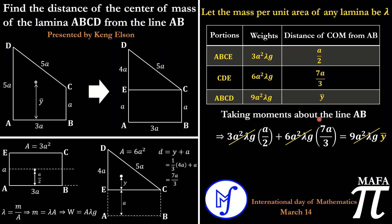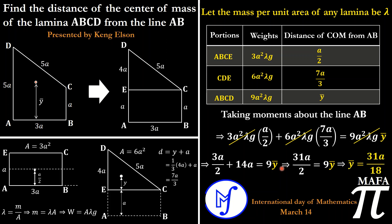The a²λg cancels everywhere. We are left with 3 times (a/2) plus 6 times (7a/3) equals 9 times y-bar. Simplifying: 3a/2 plus 14a equals 9 y-bar, giving us y-bar equal to 31a/18. We conclude that the distance of the center of mass of laminar ABCD from side AB is 31a/18 units. See you in the next video, thanks for watching!